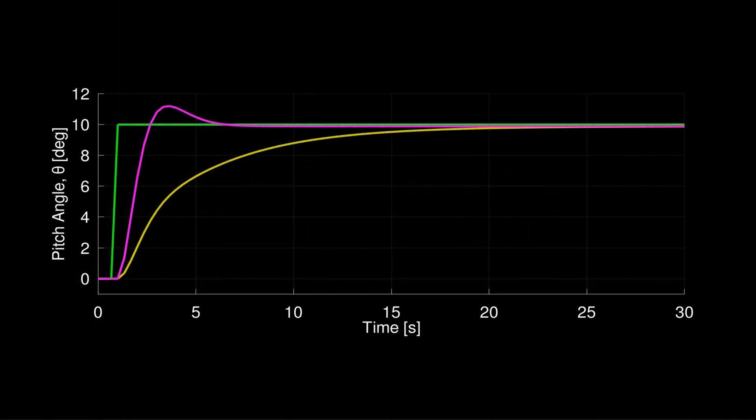So far in our approach, we've assumed that we accurately know the pitch angle pole location in the closed loop system at minus 0.22. This was necessary for the complete cancellation of the slow pole and its replacement with the faster pole at minus 0.88.